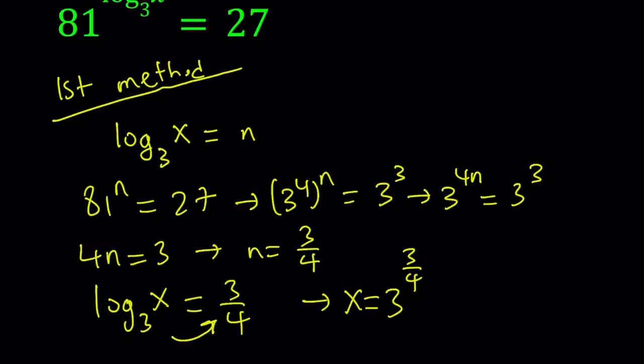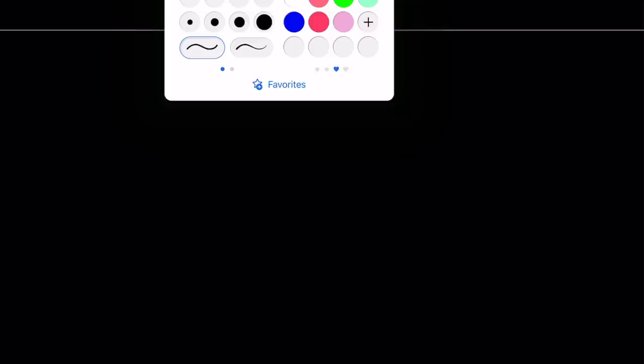I'm going to simplify this a little bit. This means that the fourth root of 3 to the third, which is basically, I mean, did I say fourth power? It should be fourth root, the fourth root of 27 because 3 to the third power is 27. Great. That is the first method. Let's go ahead and take a look at the second method.